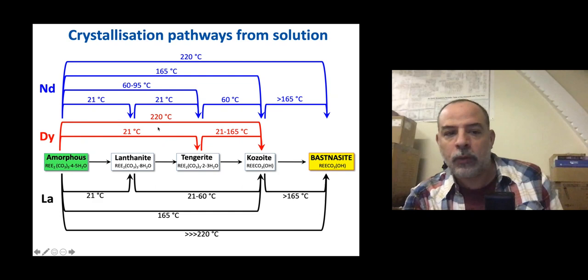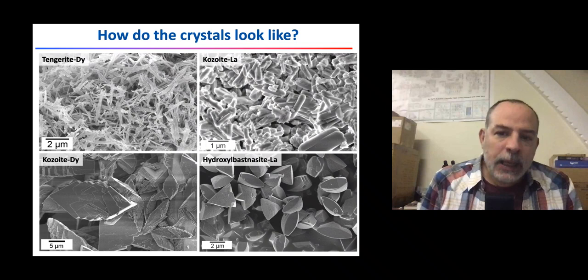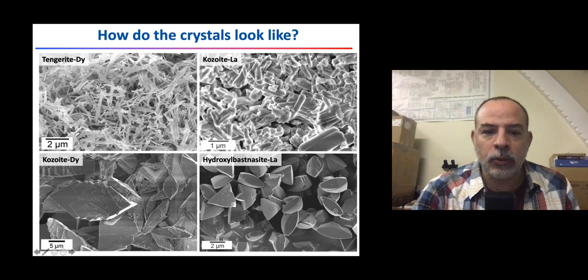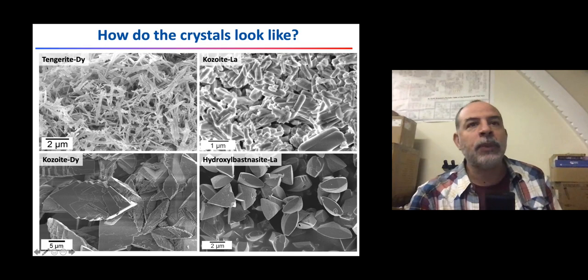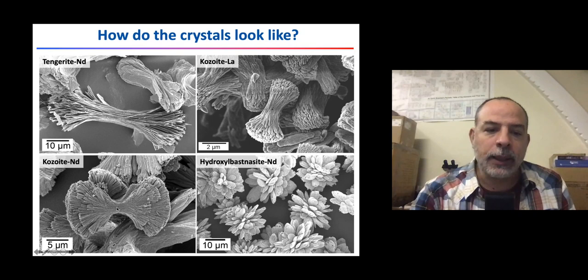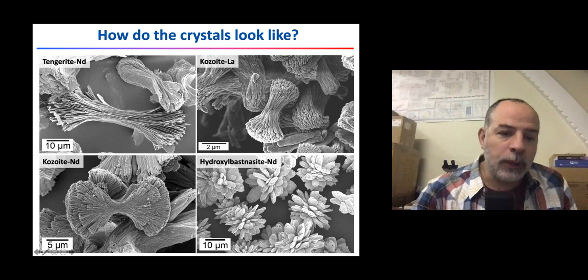The crystals have different shapes and sizes: tancoite, kozoite with lanthanum, kozoite with dysprosium, hydroxylbastnäsite, and bastnäsite. Sometimes they have very nice shapes — aggregates made of many crystals forming bowtie or cauliflower shapes. Zooming in, you can see these are made of nanocrystals — tiny crystals assembling into these larger structures.